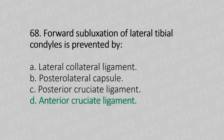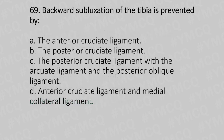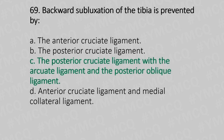Now let's move to question number 69. Backward subluxation of the tibia is prevented by. Option A: the anterior cruciate ligament. Option B: the posterior cruciate ligament. Option C: the posterior cruciate ligament with the arcuate ligament and the posterior oblique ligament. Option D: anterior cruciate ligament and the medial collateral ligament. And the answer is Option C, the posterior cruciate ligament with the arcuate ligament and the posterior oblique ligament.